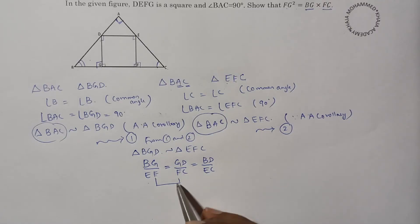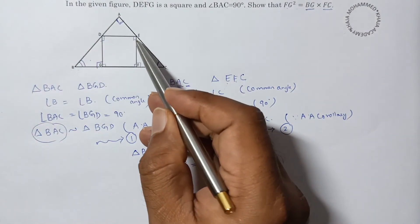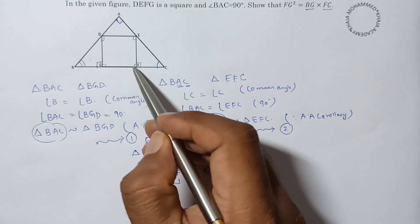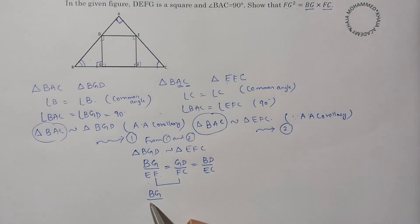Take these two equations: BG by EF. EF is a side of the square, so I can write it as GF or FG because all sides are equal. So I am writing FG.